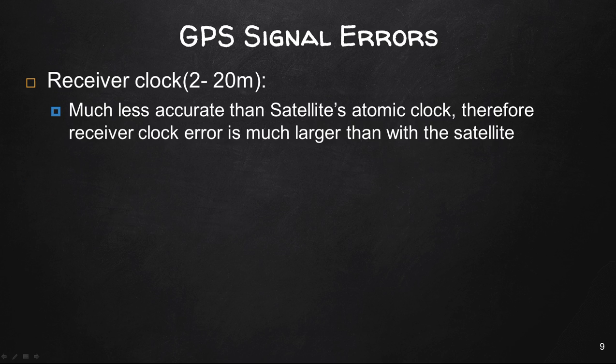GPS receivers are equipped with quartz crystal clocks that are less stable than the atomic clocks used in the satellites. Receiver clock error can be eliminated, however, by comparing times of arrival signal from two satellites whose transmitted times are known exactly.